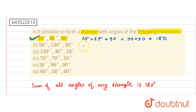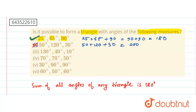Now let us come to the second case. The addition of these three: 50 plus 120 plus 30. 50 plus 120 is 170, plus 30 is 200. So it is not possible to form a triangle because the sum of all angles is 200, not 180.